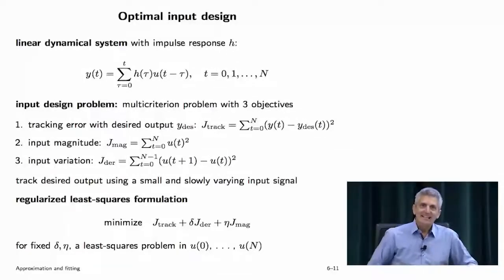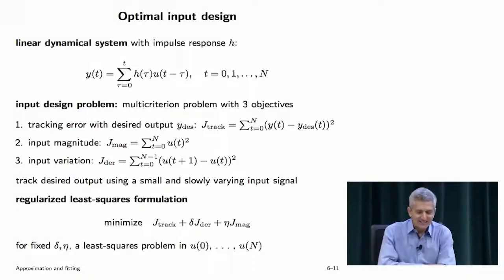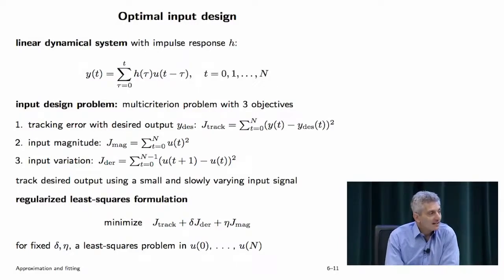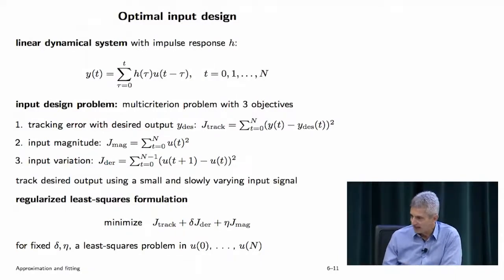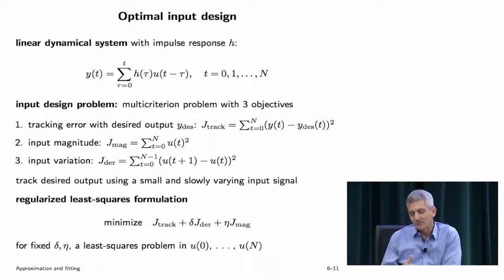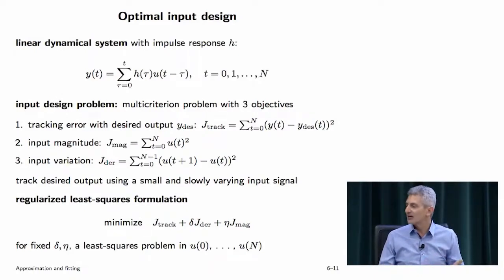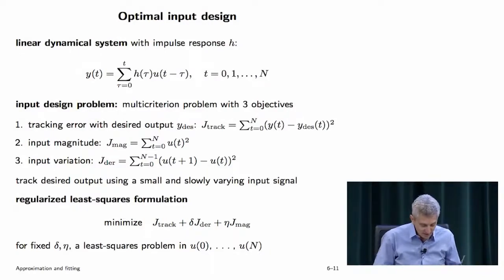Let's look at an example. It's very simple but meant to illustrate exactly the design flow idea I talked about earlier — how do you use these things? This will be one from control, but it could just as well be statistics, image processing, video processing, or finance. Here's the idea: I have a convolution system. I apply a scalar input U at various time intervals — it could be a force I apply to something. The output is a convolution of the input with a convolution kernel (called an impulse response in EE dialect).